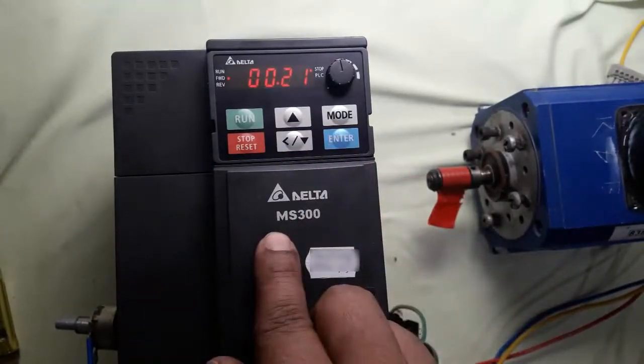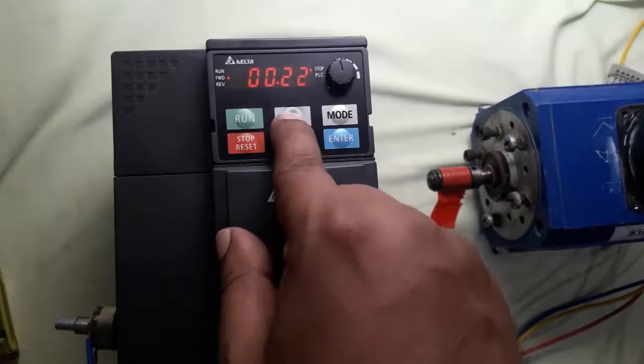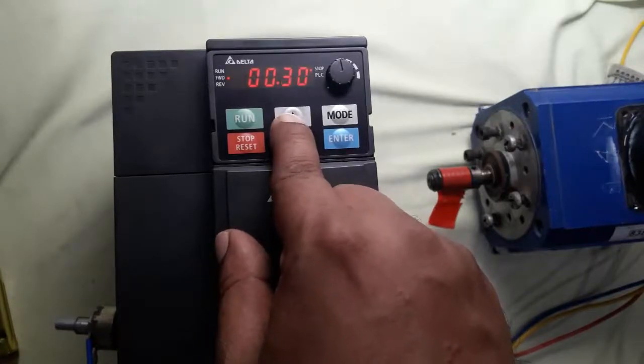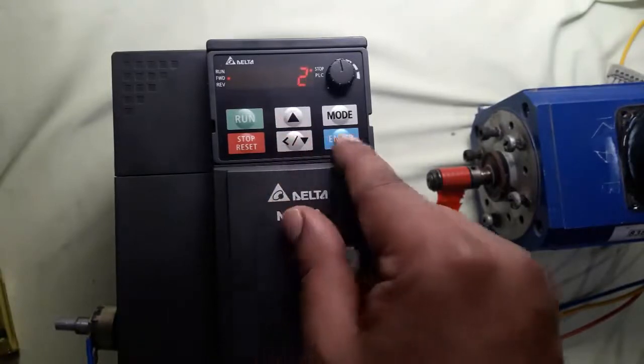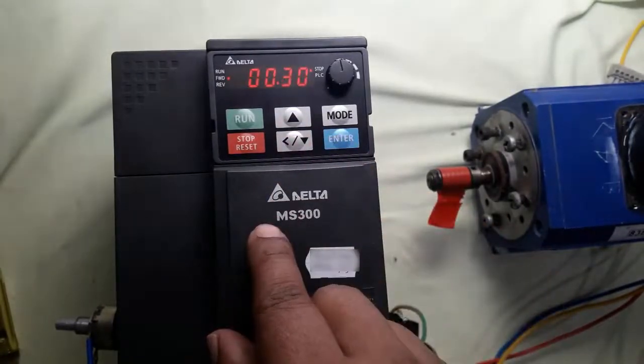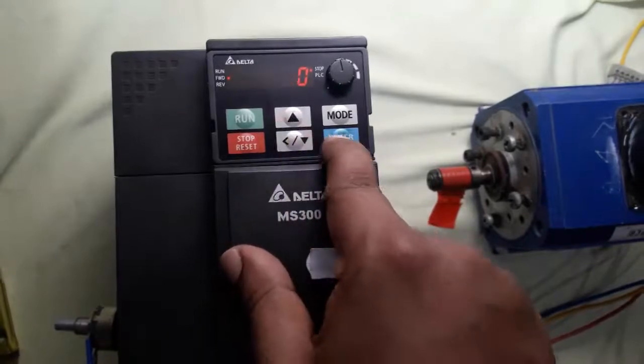Also need to set parameter frequency command hand mode. Parameter 32 set here to external analog input 2. And parameter 31 set to 2.